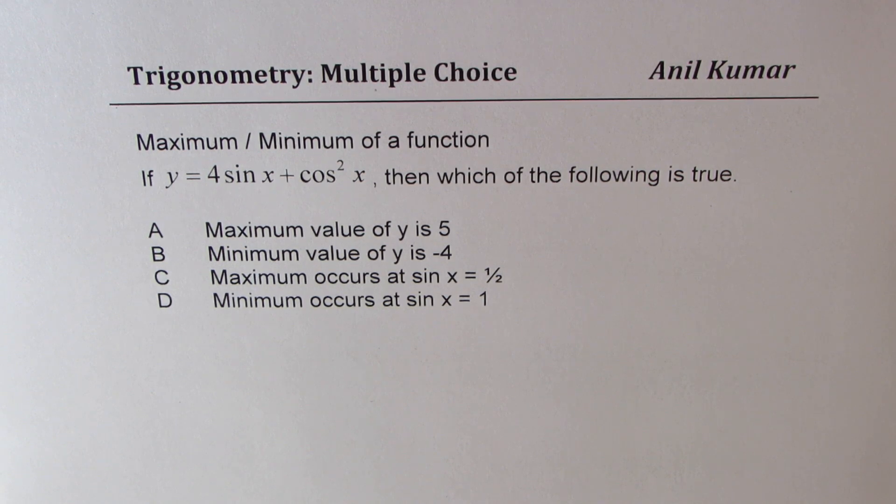This is based on maximum and minimum concept. The question is, if y equals 4 sin x plus cos squared x, then which of the following is true?